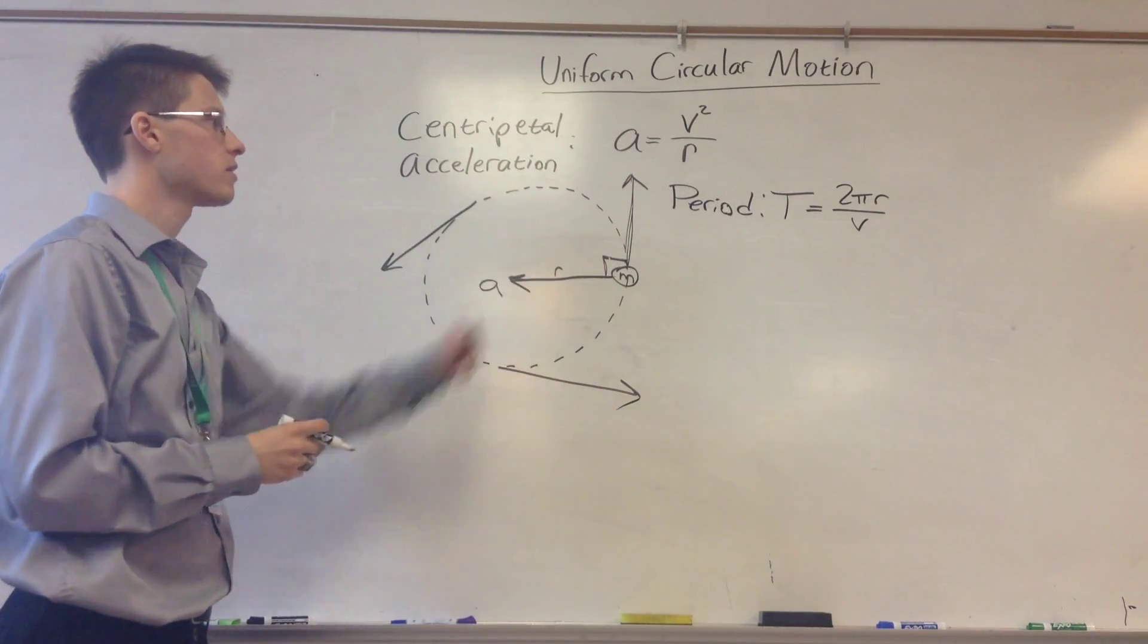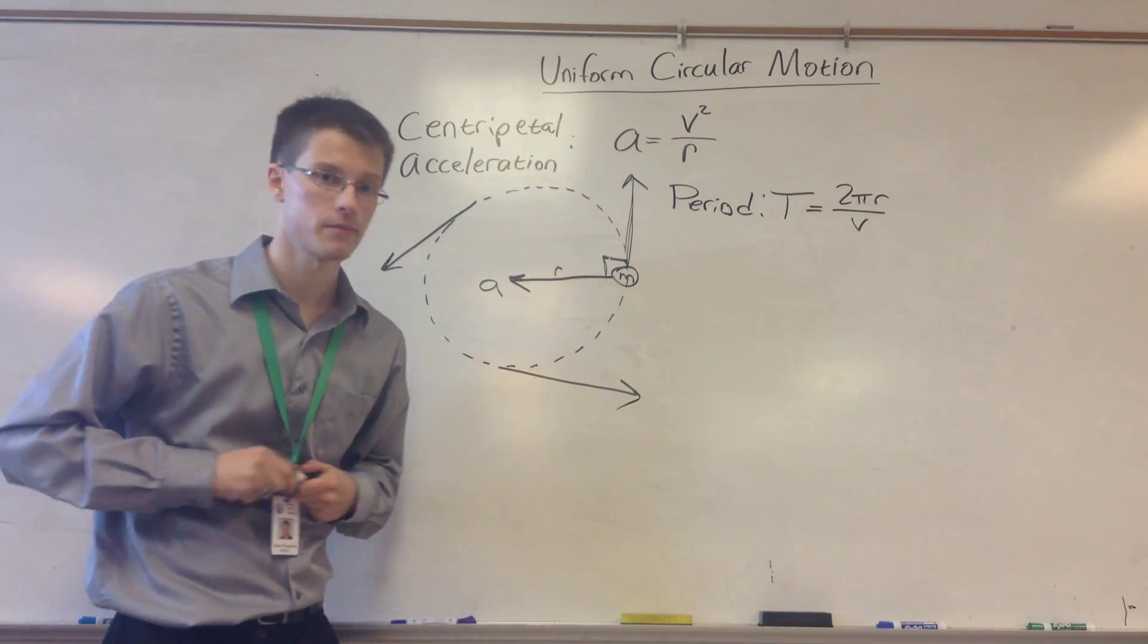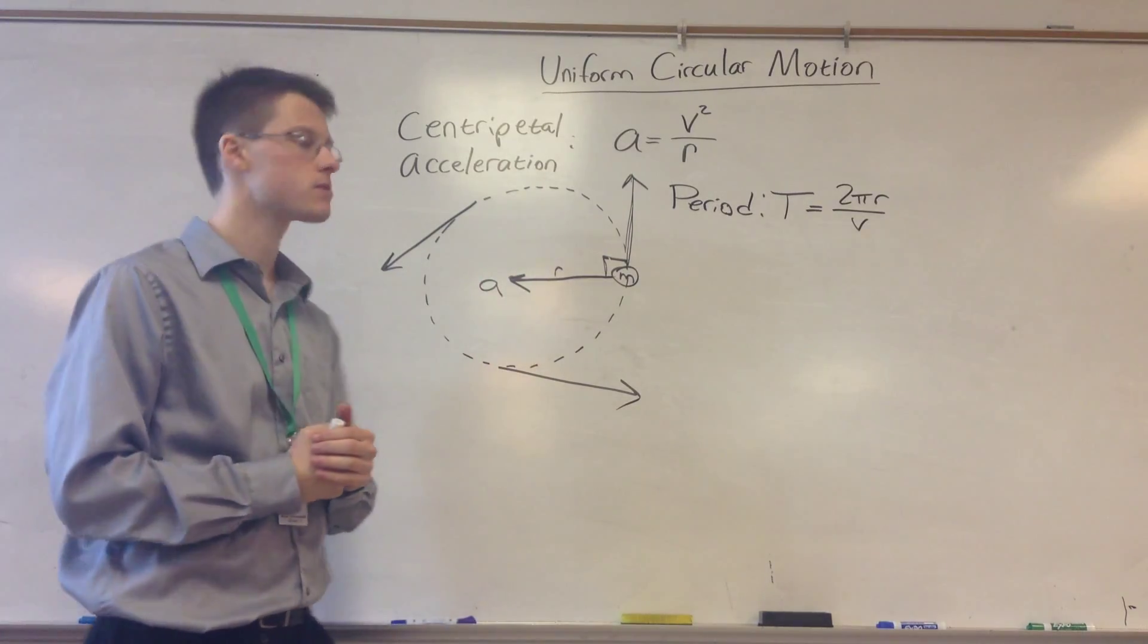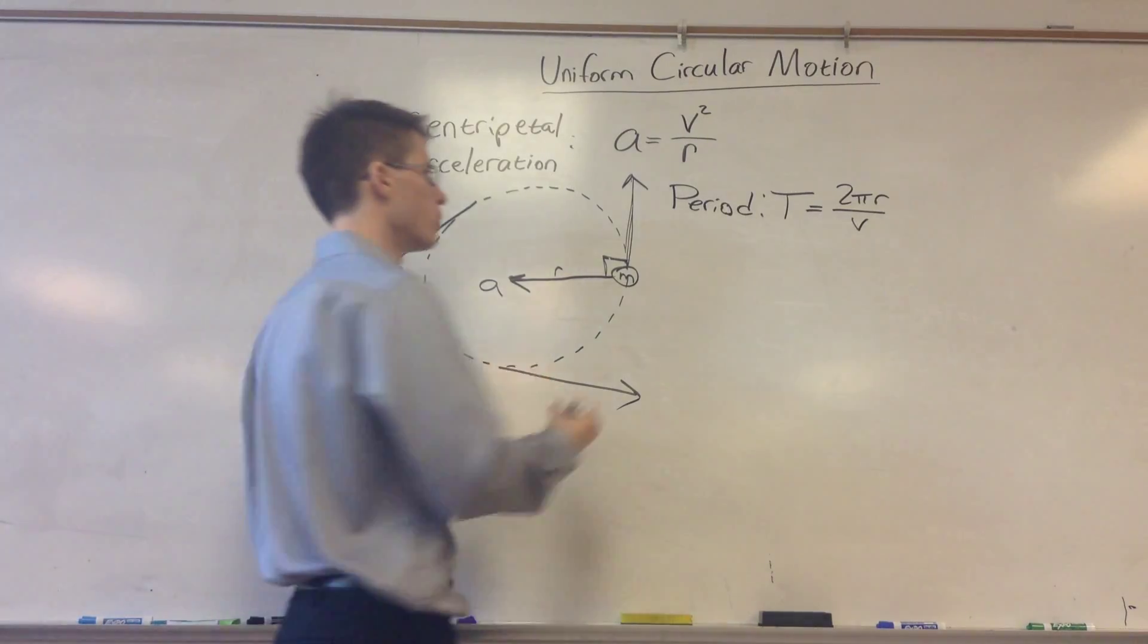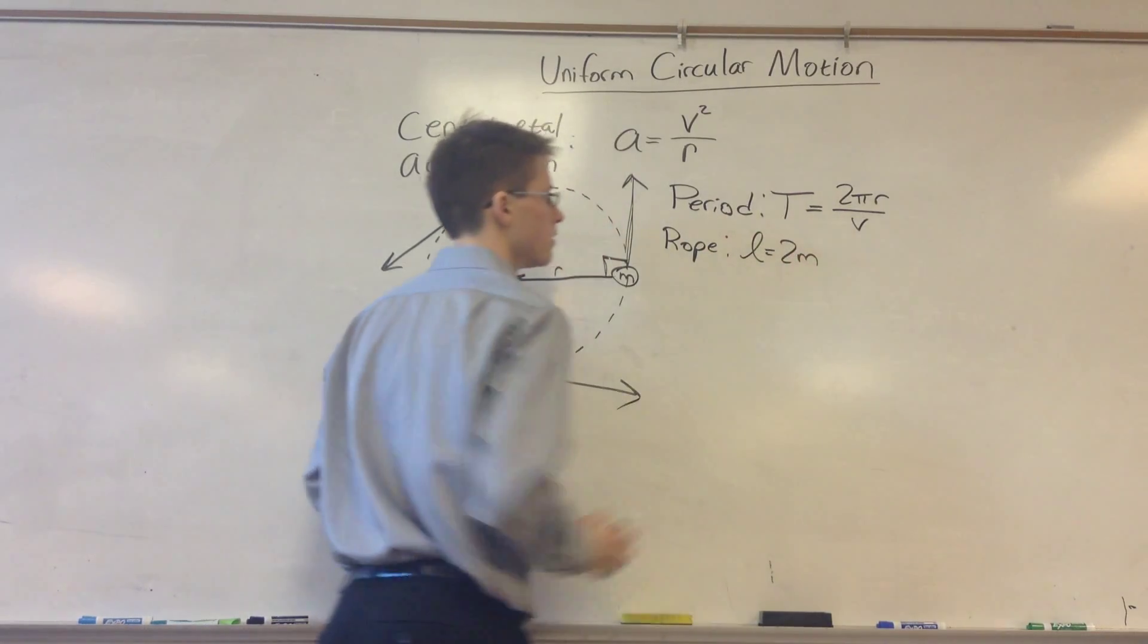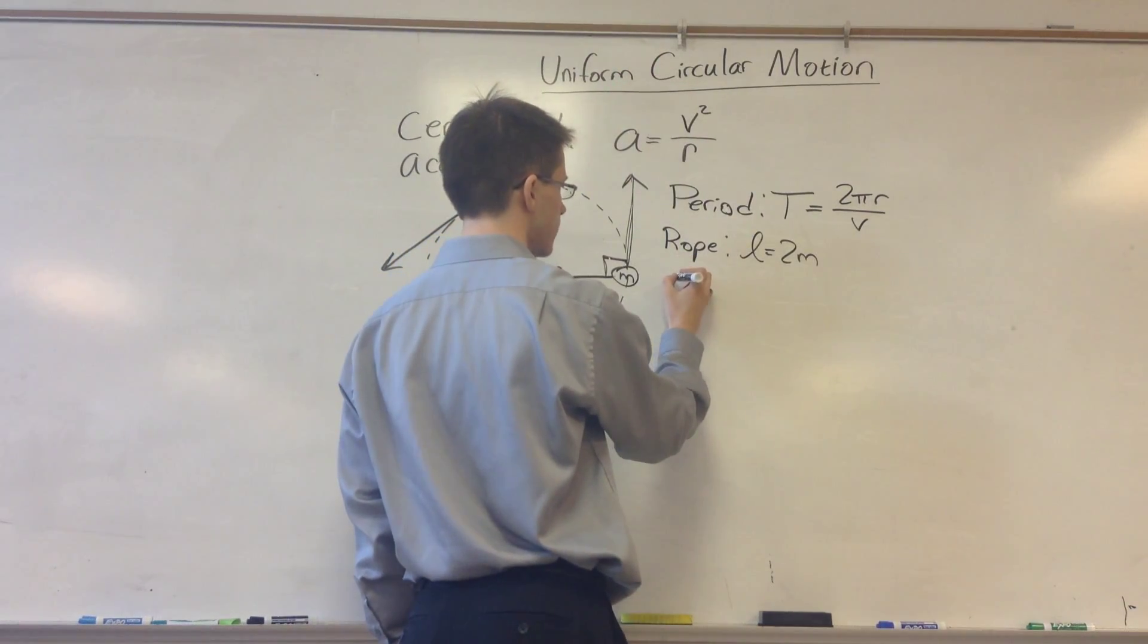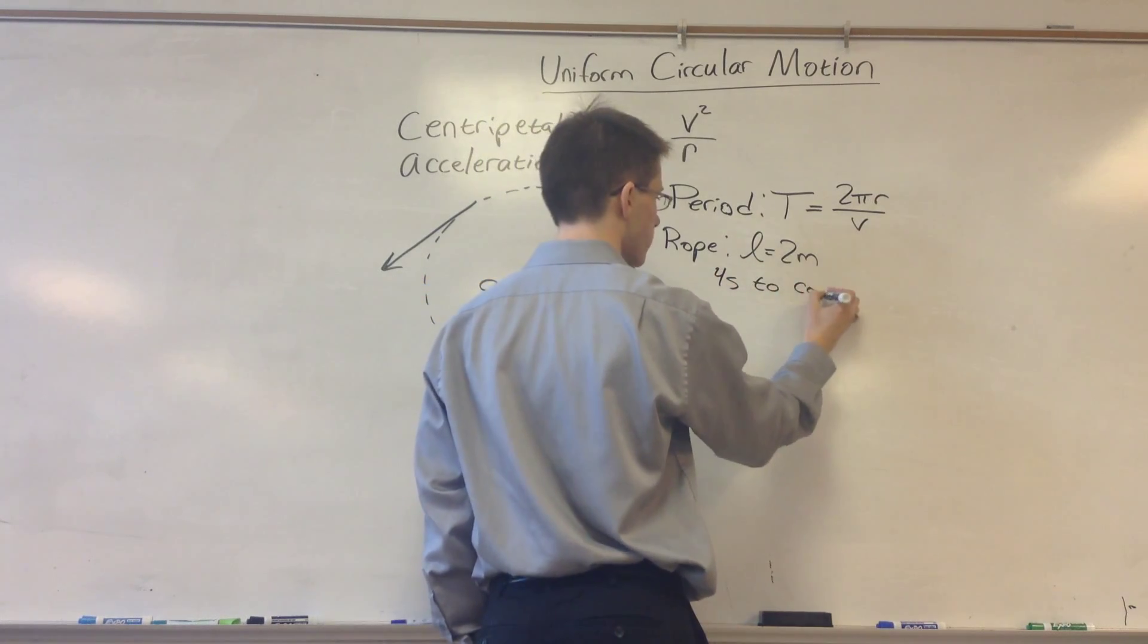These two things together are going to allow you to solve a lot of circular motion problems. In the coming videos, we're going to combine this with some other forces and see what happens. But for now, let's look at a simple problem. Let's say I have a rope, and let's say my rope has a length of 2 meters. Suppose I swing it in a circle over my head, and let's say that it takes 4 seconds to complete one rotation.